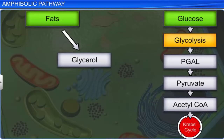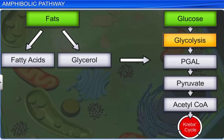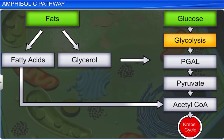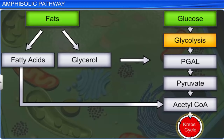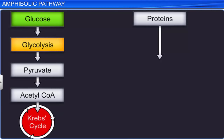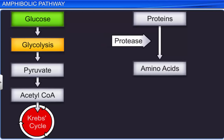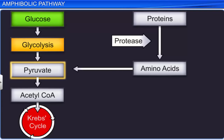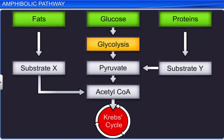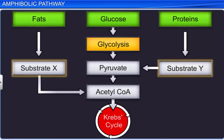Fats are first broken down into glycerol and fatty acids. Glycerol is then converted into PGAL, an intermediary substrate of glycolysis. In the same way, fatty acids are broken down to form acetyl coenzyme A, an intermediary substrate of the Krebs cycle. Similarly, proteins are broken down by protease enzymes into amino acids. These amino acids are converted into different intermediary substrates of the Krebs cycle such as pyruvate. Thus, in addition to glucose, plants use fats and proteins as respiratory substrates to produce energy.